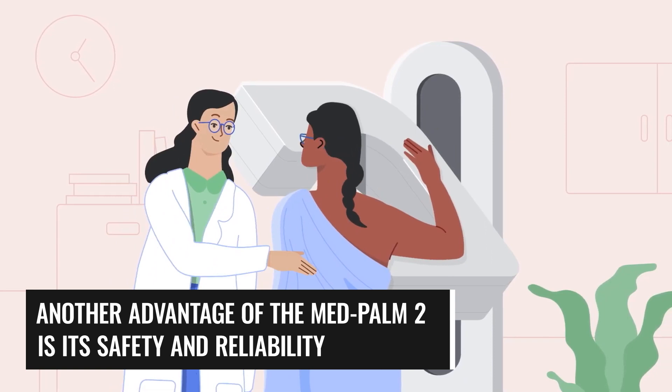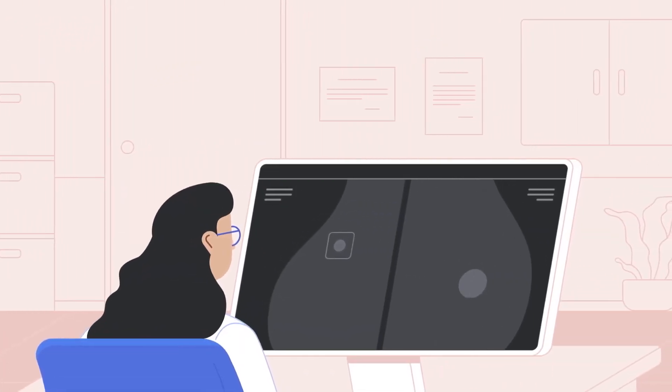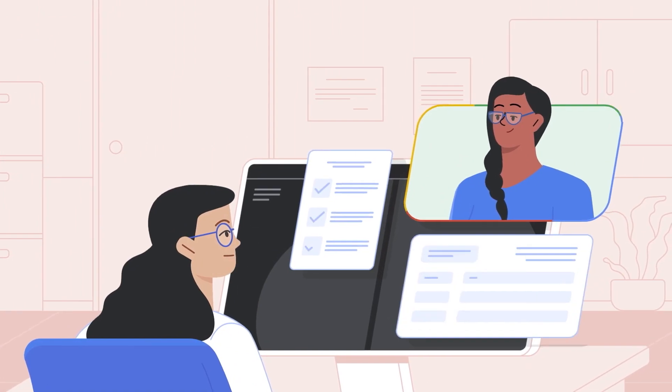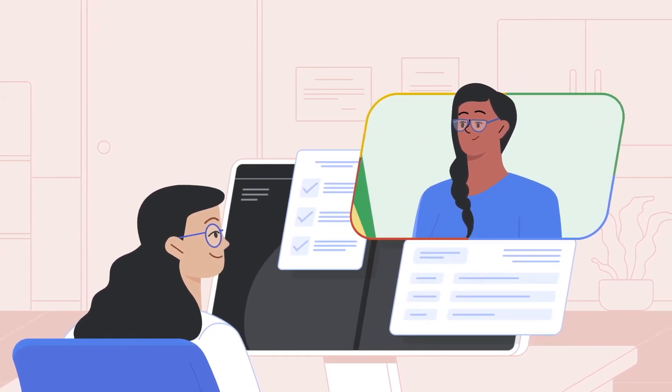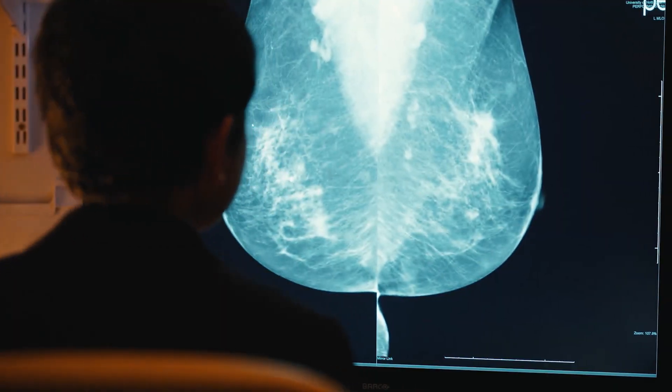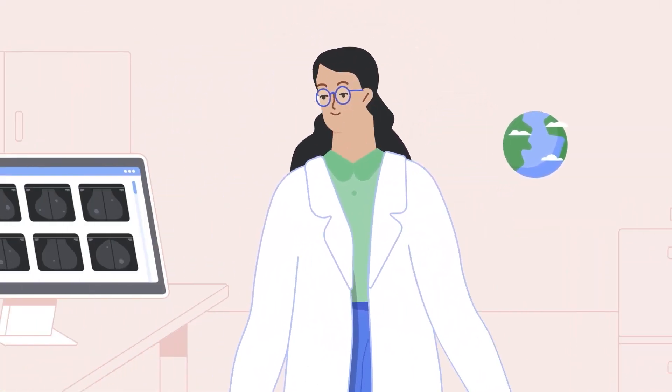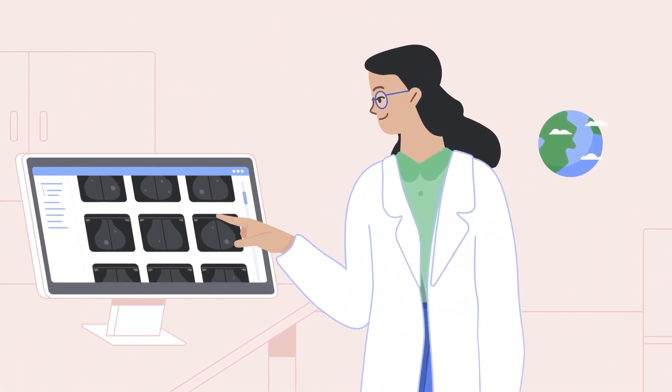Another advantage of MedPalm 2 is its safety and reliability. It has been designed to ensure the safety and reliability of its output by incorporating several mechanisms such as uncertainty estimation, explainability, and ethics. These mechanisms can estimate the uncertainty of its answers, provide explanations for its answers, and avoid biases and disparities that may arise from using skewed or imbalanced data.